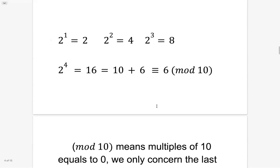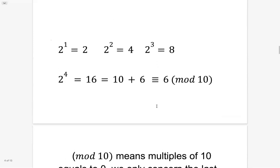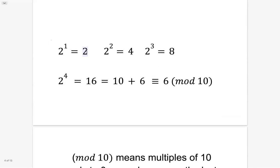So if we do 2 raised by 5, we get 32. The last digit is 2. So we see the power of 2, we calculate, it has a pattern. It ends up at 2, or 4, or 8, or 6.